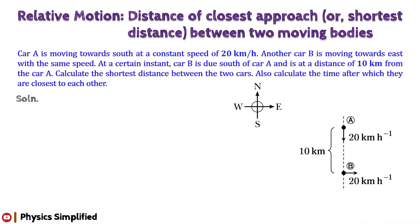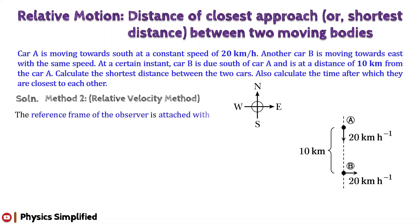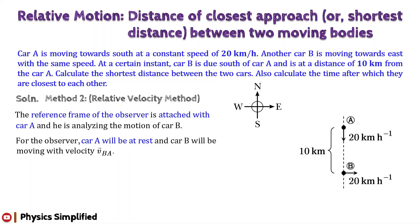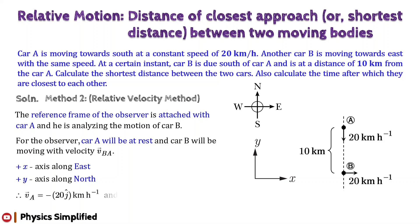Now we will solve the same problem again, but using the concept of relative motion. Here, we will calculate the velocity of B relative to A. So the observer will be inside car A. Hence the reference frame of the observer will be attached with car A, and he will analyze the motion of car B. To find the relative velocity, we consider the positive x-axis along the east and positive y-axis along the north. Therefore, the velocity of car A is vector v_A = −20ĵ km/h, and vector v_B = 20î km/h. The negative sign indicates that the velocity of car A is directed towards the negative y-axis.